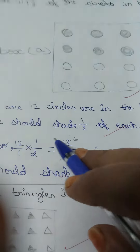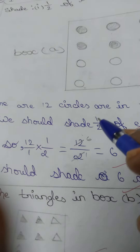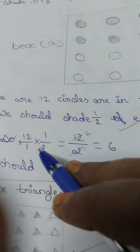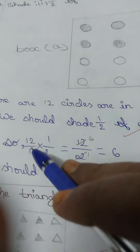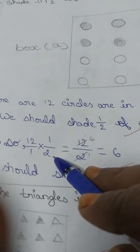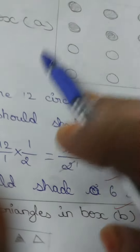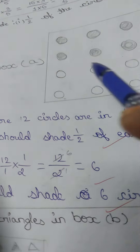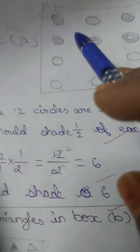This is the 7th class. We should shade half of each of the circles in the box.